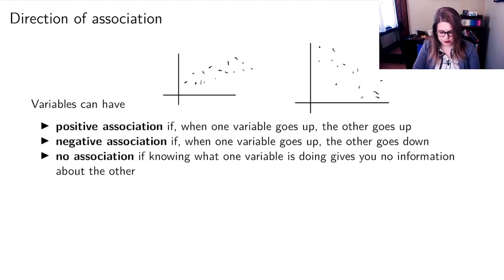We could have no association if knowing what one variable is doing gives you no information about the other. So it's just randomness.